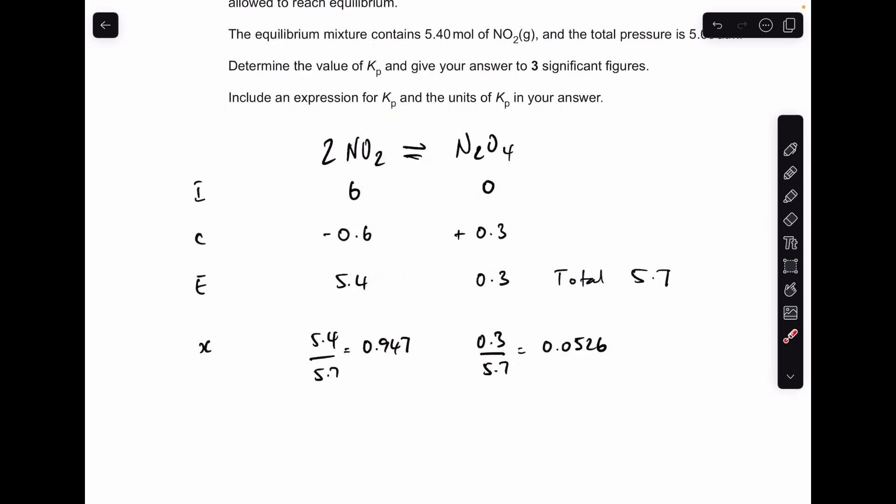Just be careful you don't round this too early. Ideally, keep the full number in your calculator. I've just gone for three significant figures. That would be totally fine there. You can do a little check if you want. These two should add up to 1. And they do. So that's all good.